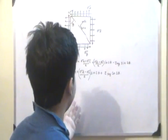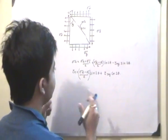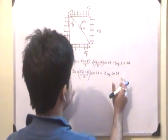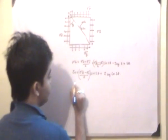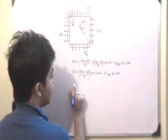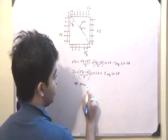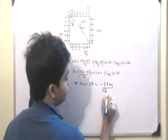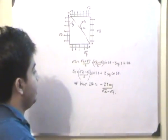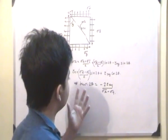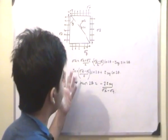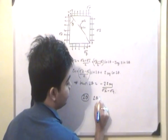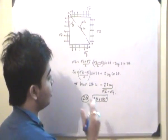So essentially, to find out the maximum and minimum value of normal stress — that is the principal stress — I set tau n equal to zero. This gives the equation: tan(2θ) = 2τxy / (σx − σy). From here we can see that at two values of 2θ — specifically at 2θ and 2θ plus 180 degrees — we will have the maximum and the minimum normal stress.